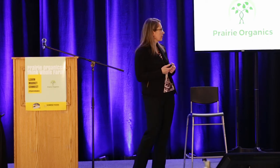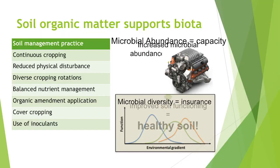There are a number of management practices that promote healthy, diverse microbial communities. Continuous cropping is one — plants are the primary source of new carbon, so having plants on the land as much as possible creates a steady food source for microbes. Reduced physical disturbance slows down decomposition and holds soil organic matter in the soil. Diverse cropping rotations, balanced nutrient management, organic amendment application, cover cropping, and use of inoculants all contribute to increased microbial biomass and improved soil function.